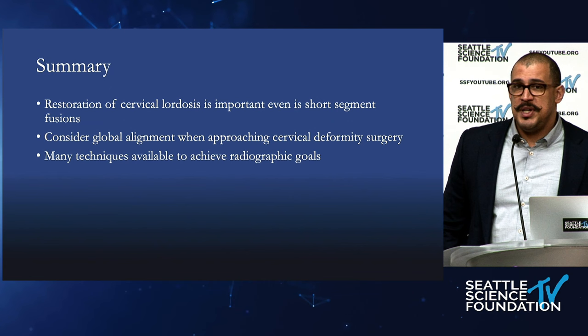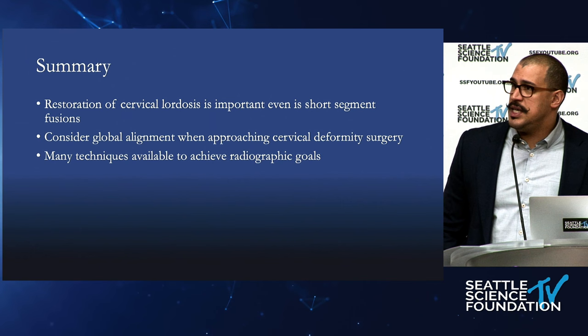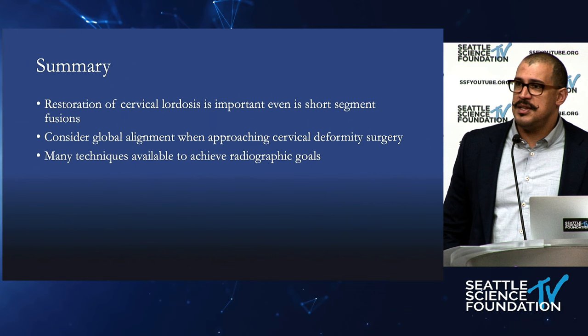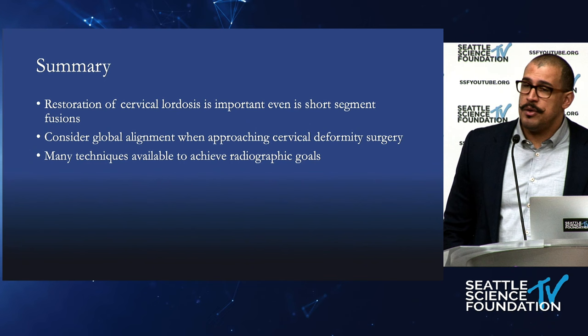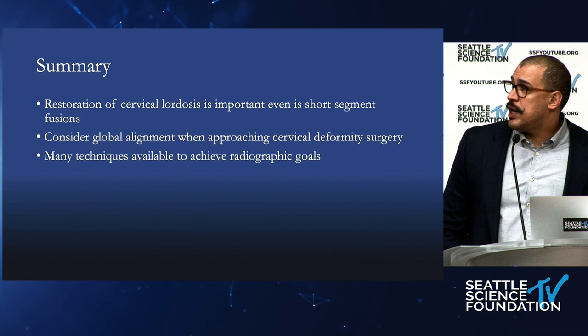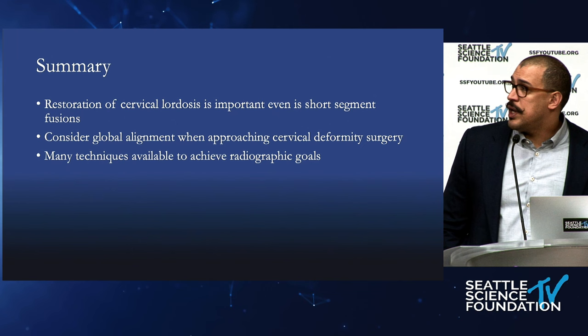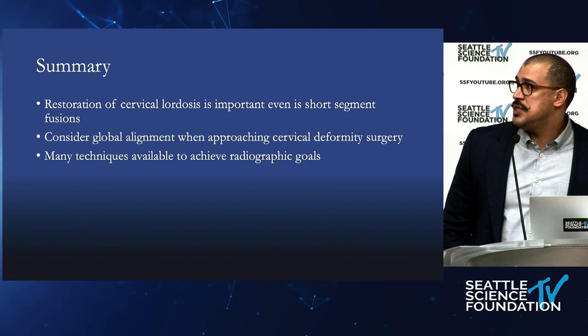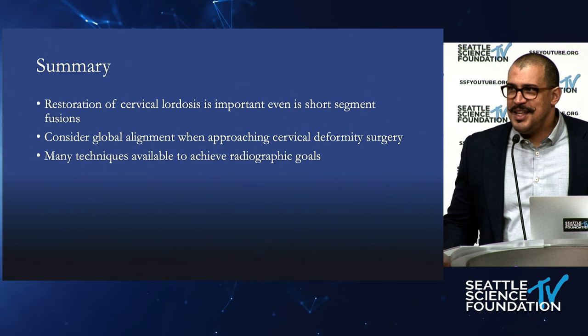In summary, cervical lordosis is a very important piece of deformity surgery, often overlooked. Even if you're only doing a two- or three-level ACDF, you may be creating deformity — not always appreciated outside these forums. Looking at global alignment when approaching cervical deformity surgery is very important, because it may take more than just addressing the acute deformity of the cervical spine. You have to think about the support further down in the thoracic spine, and really work towards an ideal radiographic plan using all resources available.